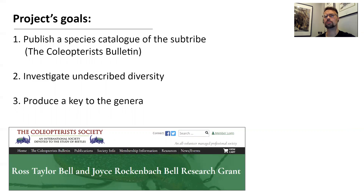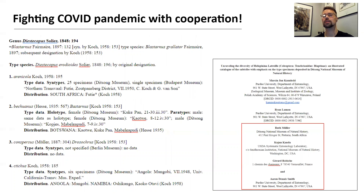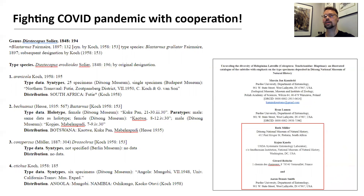The specific goals of our project are listed here. Our key assumption was that we would go to the Ditsong Museum; however, the global pandemic disrupted those plans a bit. In order to efficiently overcome this obstacle, we reached out to colleagues and formed a research group. Ruth agreed to take photos of type specimens hosted at the Ditsong collection. Kojun is guiding us through taxonomic works. Gerard is a specialist working on Halepinoid beetles, especially the genus Amatoides, and Aaron is verifying and contributing data to the catalog.